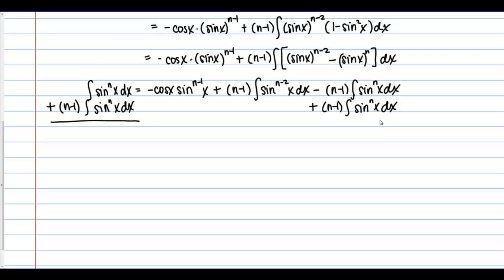On the left hand side, I'm adding one factor to n minus 1 factors. Overall, that's just going to leave me with n factors. On the right hand side, I'm subtracting and adding the same thing, so those are going to cancel. So, I end up with the following.